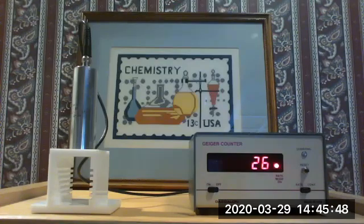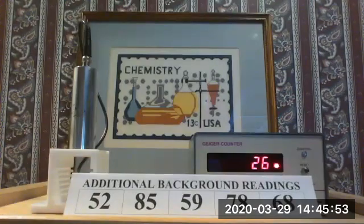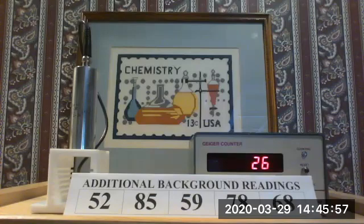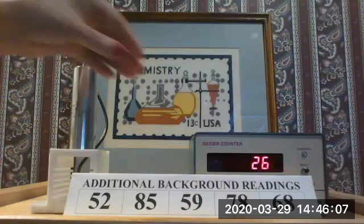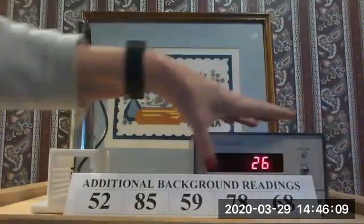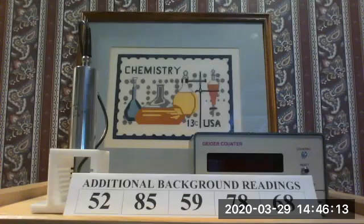All right, so in the interest of time, here are five additional background readings. So you'd want at least a total of 10 to get a good average background reading. So you can go ahead and write those down so that you've got 10 total readings for your background.